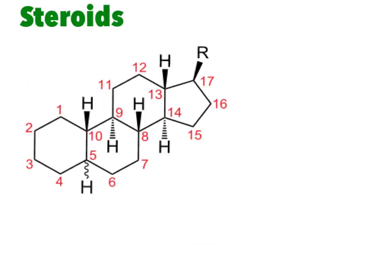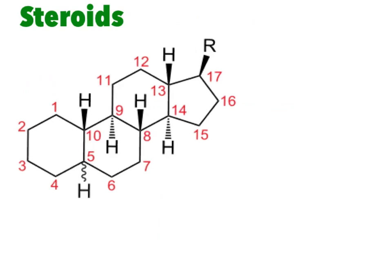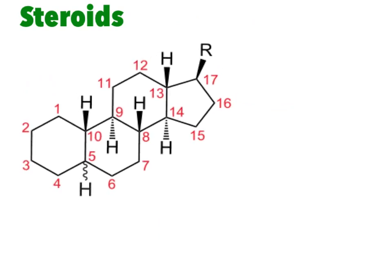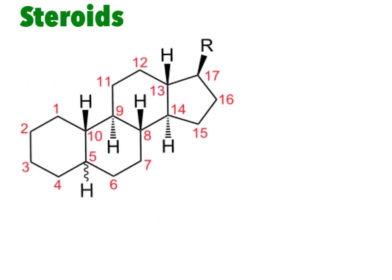Our last type of lipid is a little different from the rest — instead of hydrocarbon chains, steroids are hydrocarbon rings. Usually there are four hydrocarbon rings fused together, with an R group that can have different attachments giving the steroid its specific characteristics. All steroids share these four carbon rings in common.